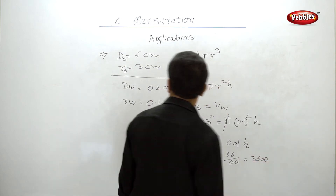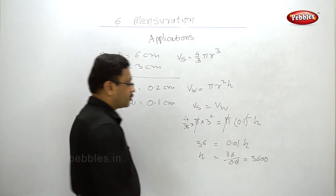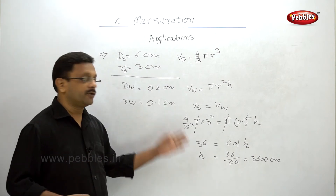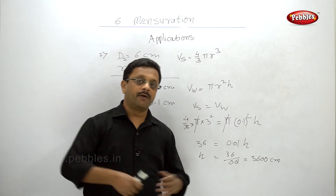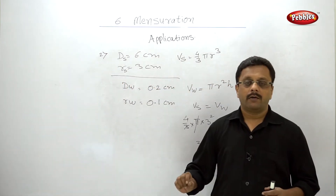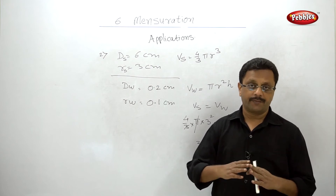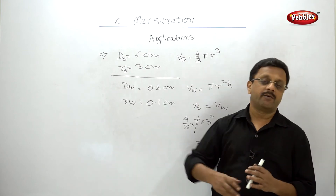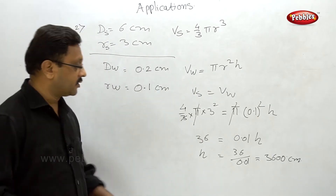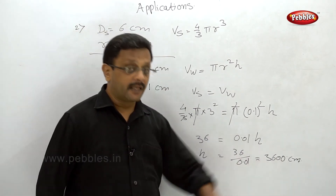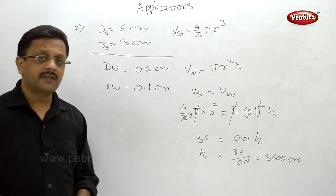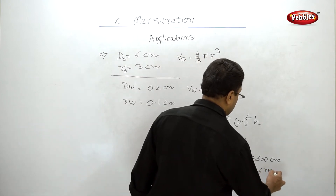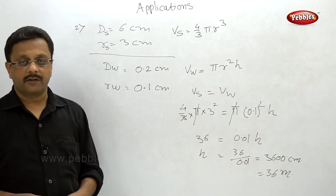So h = 36 / 0.01 = 3600 centimeters. Since it is a wire, we call it the length rather than height. The wire is still of cylindrical shape — it has a radius of the cross-section and a length just like a cylinder's height. The final answer is 3600 centimeters, or equivalently 36 meters.